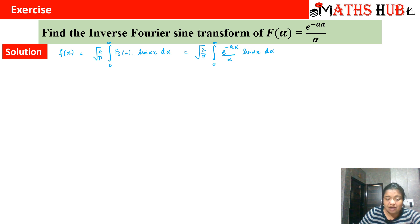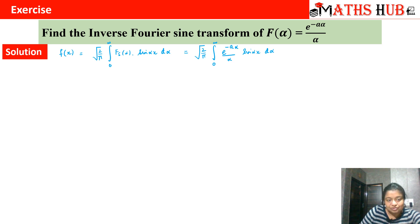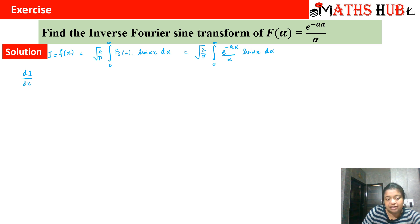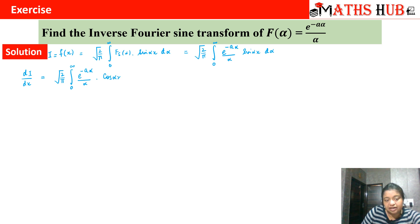We cannot directly apply integration by parts here because we have an exponential, a sine function, and an algebraic function (1/α) all together. So we convert this integral into a differential equation. Let us name this integral I. Since the integration is with respect to α, we differentiate I with respect to x. The derivative of sin(αx) with respect to x is α cos(αx), so the α in the denominator cancels.